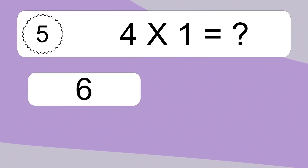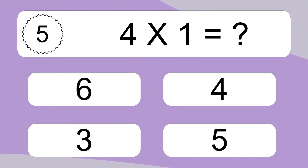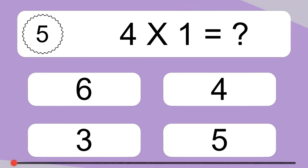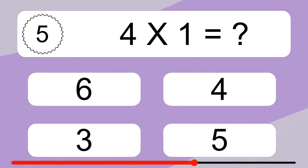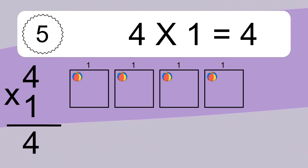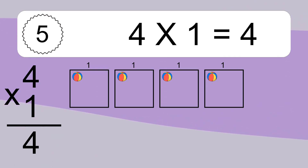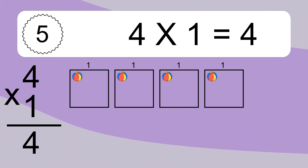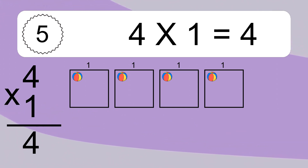4 times 1 equals what? 4 times 1 equals 4. We have 4 boxes, and each box has 1 colorful ball inside. If you count all the balls in all the boxes together, you will have 4 times 1 balls. This equals 4 balls.